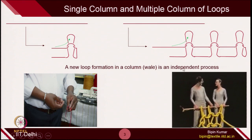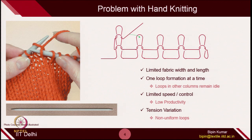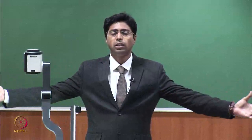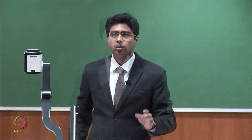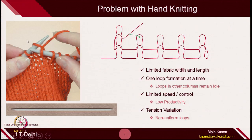Now comes the problem of hand knitting. You have seen many ladies doing weft knitting in Asian countries, where they use needle bars and create loops from left to right and right to left, one by one. The big problem with hand knitting is it has limited fabric width and length capabilities because our hand is very limited — we cannot create a fabric more than 2 meters in length. It is very difficult to control the entire bigger lengths or widths of fabrics. We cannot create bigger lengths and we cannot work with wide fabric — that is the big limitation of weft knitting by hand.